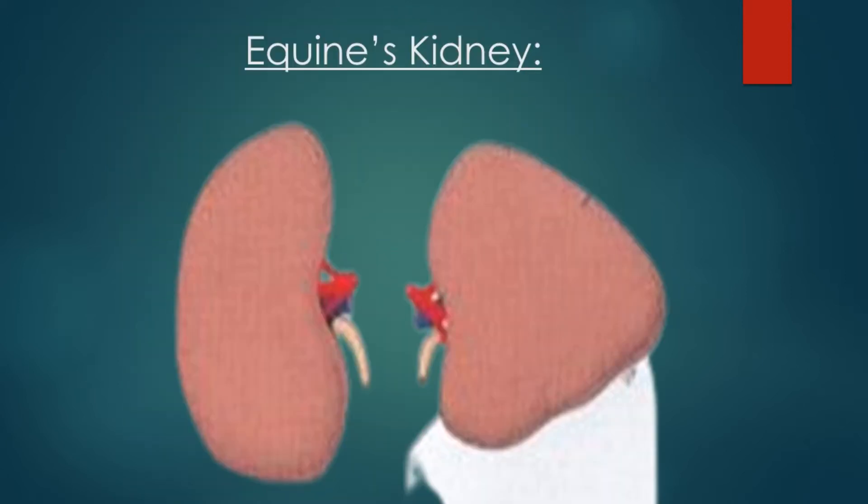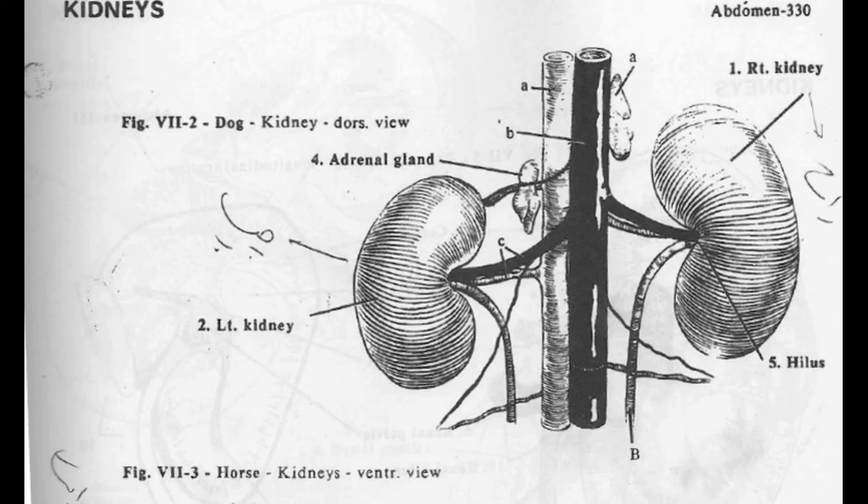In the case of horse, both kidneys are smooth but the right kidney is heart-shaped. So we have seen that only the kidney of ox is lobated, while that of small ruminants, carnivores and equines is smooth, and in the case of equines, the right kidney is heart-shaped.